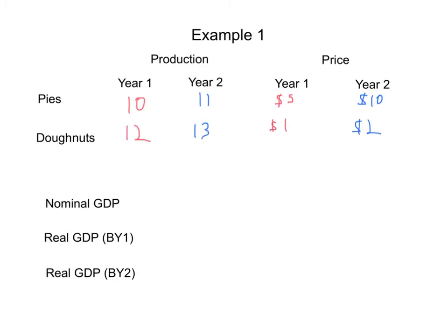Let's say a country can produce either pies or donuts. In year one, they produced 10 pies and 12 donuts. And in year two, they produced 11 pies and 13 donuts. So the output went up slightly. The price in year one of a pie was $5, and in year two, the price of a pie was $10, whereas in year one for donuts, the price was $1, and in year two, the price was $2, so we're seeing some inflation. In fact, 100% inflation.